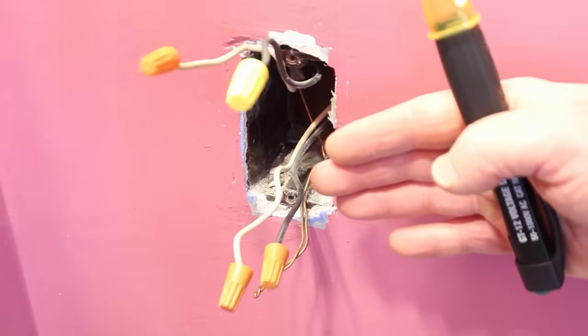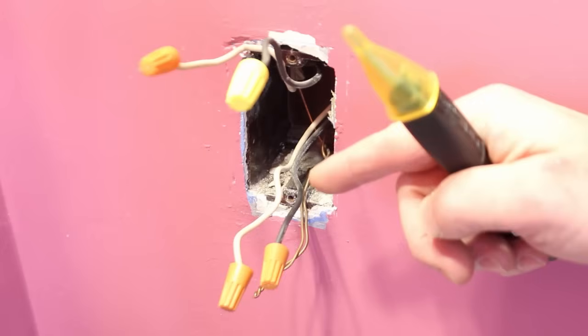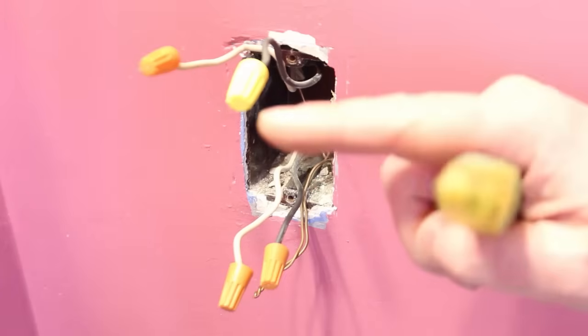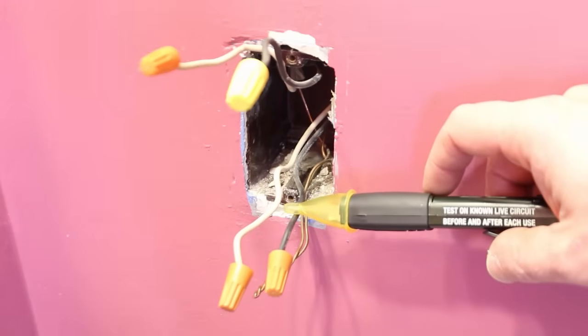Before working on these wires again, make sure you turn the electricity off at the circuit breaker. Don't forget to do that. Then double check that it's off using your voltage detector.